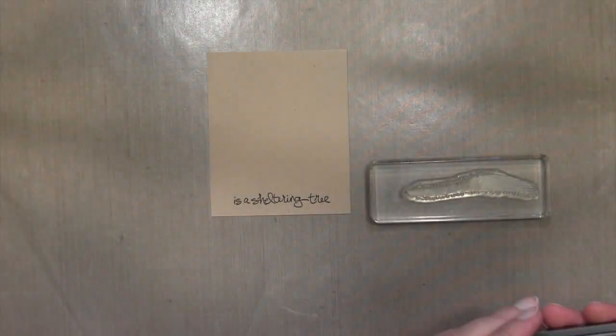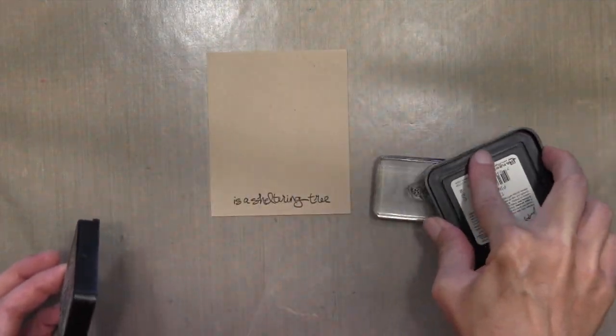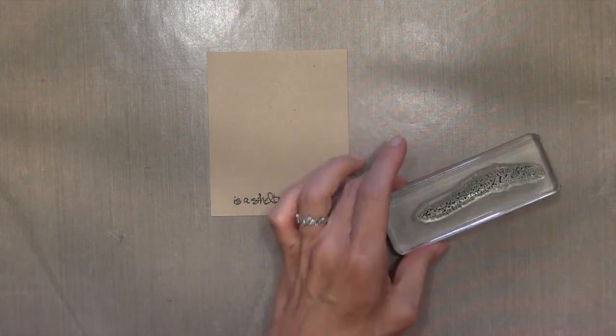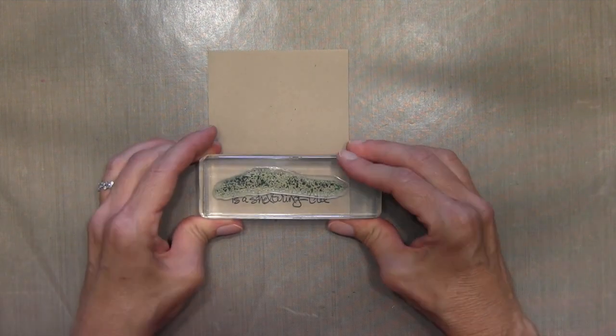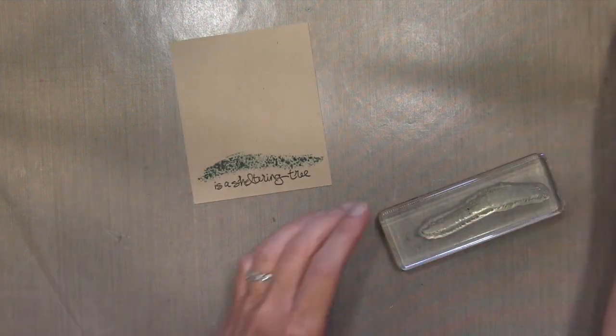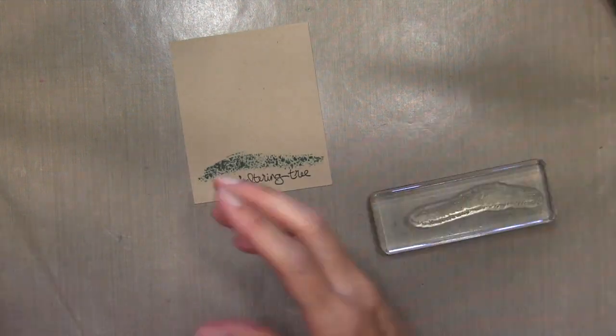And I decided to start at the bottom and work my way up. Now I've got kind of this green strip that's gonna be grass. And I inked it up with some pine needles and then I wiped it off randomly with a baby wipe. And then I'll just do a quick clean.